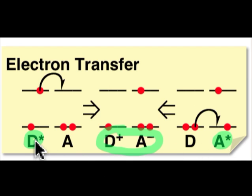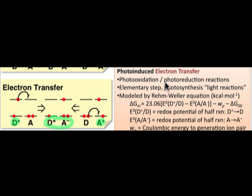If we begin with the excited state of the donor, the process is known as photoreduction. An electron from the higher-lying singly occupied molecular orbital of the excited state of D transfers to the lowest unoccupied molecular orbital of A.